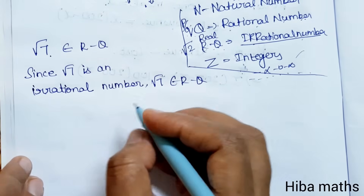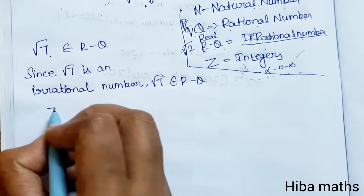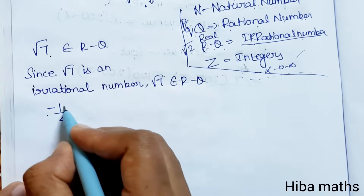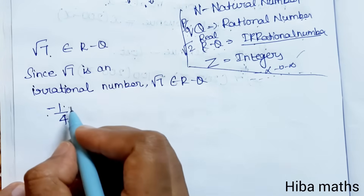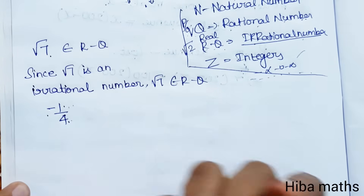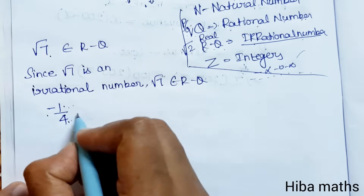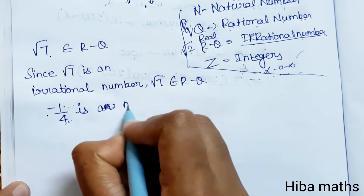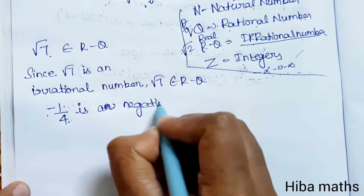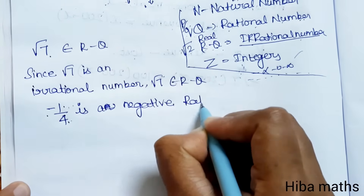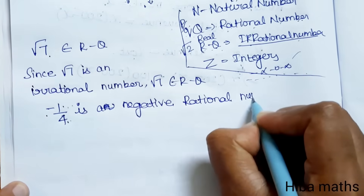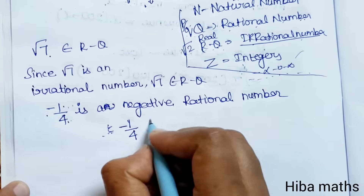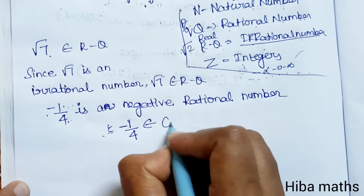Next, minus 1 by 4. It is negative, but the numerator and denominator are in P by Q format. Since it is in P by Q format, it is a rational number — a negative rational number. So minus 1 by 4 belongs to Q.